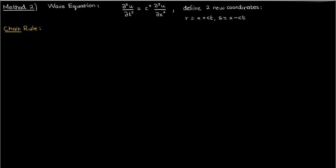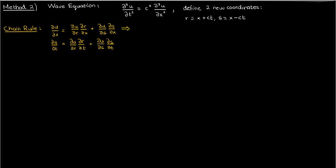We can use the chain rule to re-express the partial derivative of u with respect to x in terms of the partial derivatives of u with respect to r and s. We can also do the same for the partial of u with respect to t. Now let's use the definitions of r and s to plug in expressions for their partial derivatives with respect to both x and t. The derivative of u with respect to x equals the partial of u with respect to r, plus the partial of u with respect to s. And the derivative of u with respect to t equals c times the partial of u with respect to r minus c times the partial of u with respect to s.